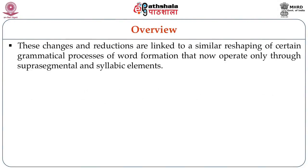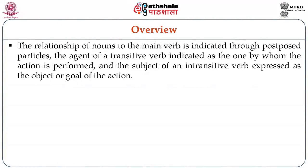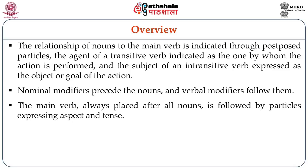These changes and reductions are linked to a similar reshaping of certain grammatical processes of word formation that now operate only through suprasegmental and syllabic elements. To a surprising degree, however, modern central Tibetan possesses grammatical categories identical with or very similar in content, though not in form, to those of classical Tibetan. The relationship of nouns to the main verb is indicated through post-posed particles, the agent of a transitive verb indicated as the one by whom the action is performed, and the subject of an intransitive verb expressed as the object or goal of the action. Nominal modifiers precede the nouns and verbal modifiers follow them. The main verb, always placed after all nouns, is followed by particles expressing aspect and tense.